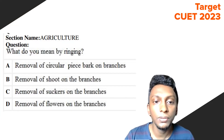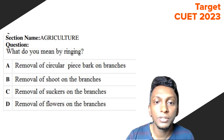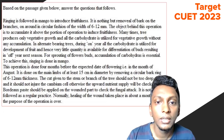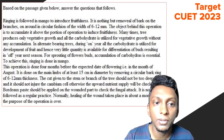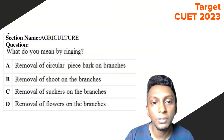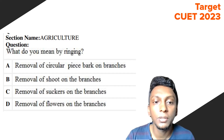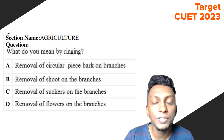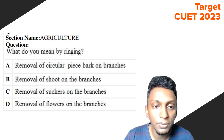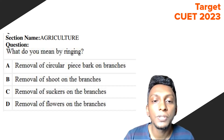Question 7: What do you mean by ringing? The options are: removal of circular piece of bark on the branches, removal of shoots on the branches, removal of suckers on the branches, and removal of flowers on the branches. The passage clearly states it is the removal of bark on branches in a circular fashion of width 6 to 12 mm. So Option A — removal of circular piece of bark on the branches — is the right answer.